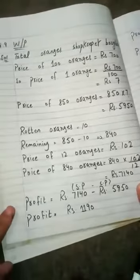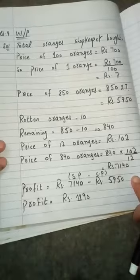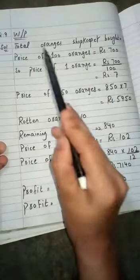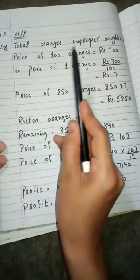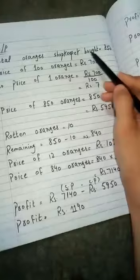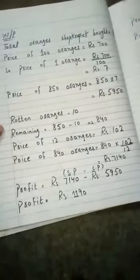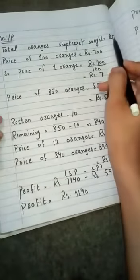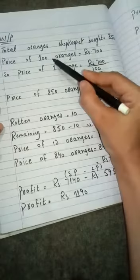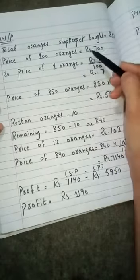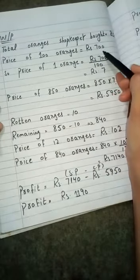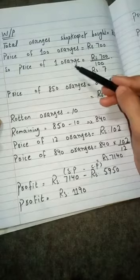After question number 8 now we are going to start question number 9. The question is: a shopkeeper bought total 850 oranges. If 100 oranges he purchased for Rs. 700, then what will be the price of 1 orange.